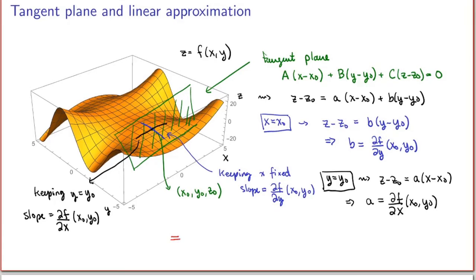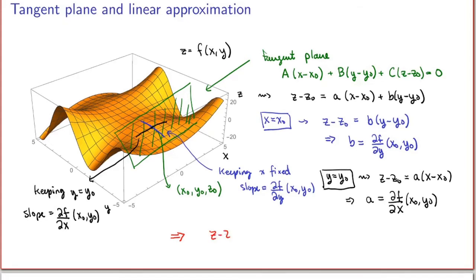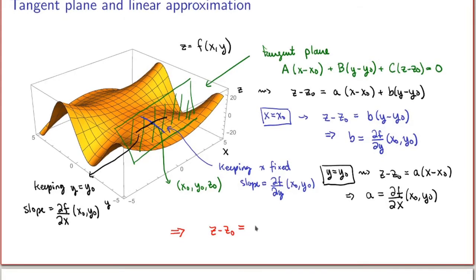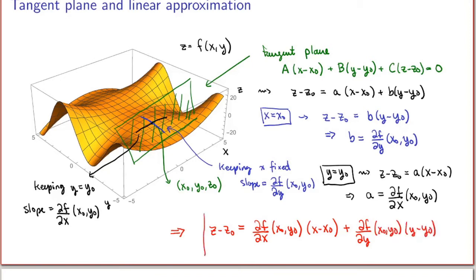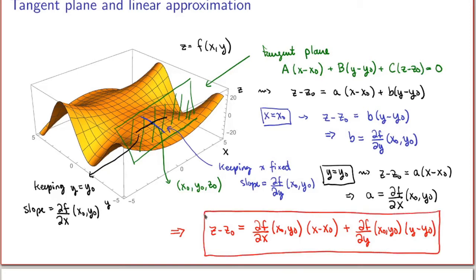Putting all this together, I've found the equation of the tangent plane to the graph of my function of two variables at the point. It is given by: z minus z₀ equals (∂f/∂x evaluated at (x₀, y₀)) times (x minus x₀) plus (∂f/∂y evaluated at (x₀, y₀)) times (y minus y₀). This is the equation of the tangent plane at the point (x₀, y₀, z₀), and it provides the linear approximation of the function near this point.